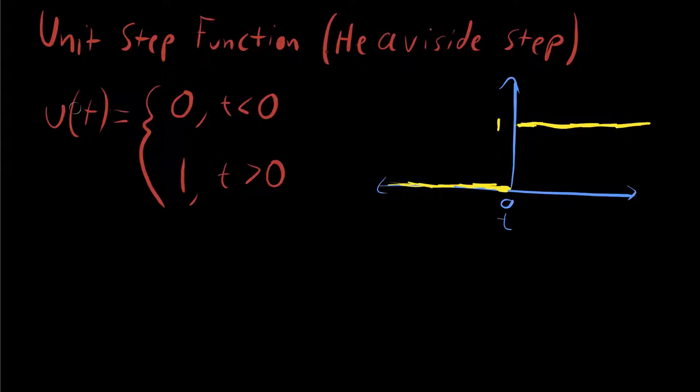One key thing to understand is that there's a relationship between the unit step function and the delta function. If you take the integral of a delta function with respect to time, you get the unit step function. Because think about it, as you are integrating from the left side here, as soon as you cross zero, then you're going to get one, and it's going to stay one from that time forward.